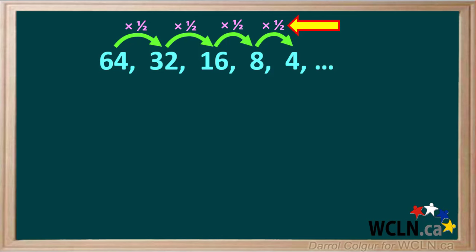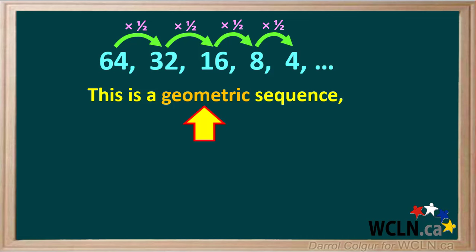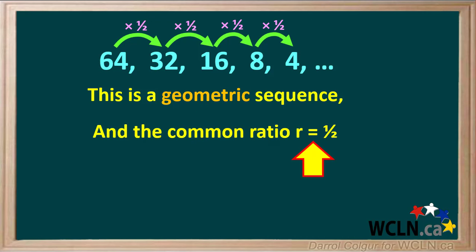We can verify this with the rest of the terms. We see that to get from each term to the next, we must multiply by 1/2. So this is a geometric sequence and the common ratio r is equal to 1/2.